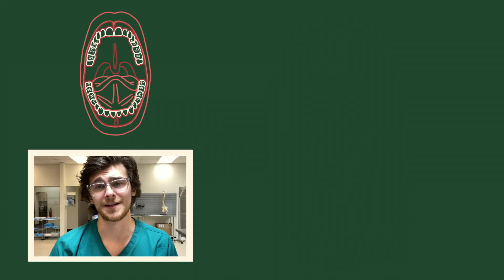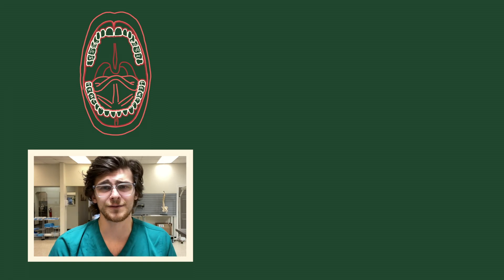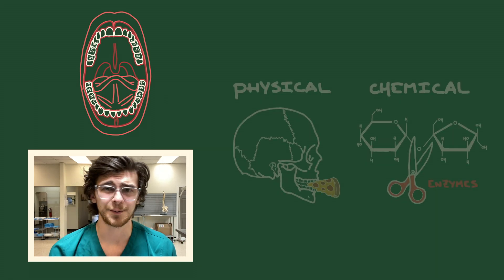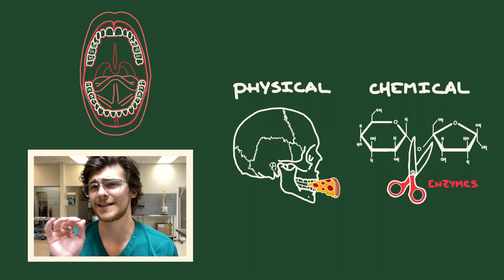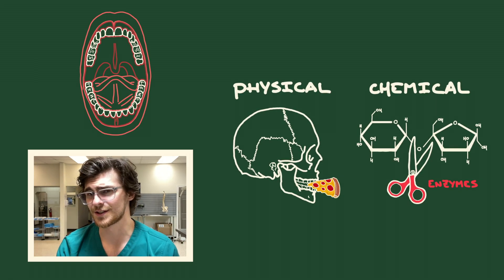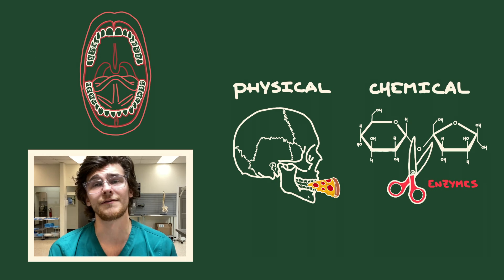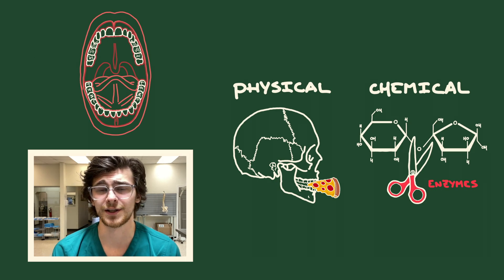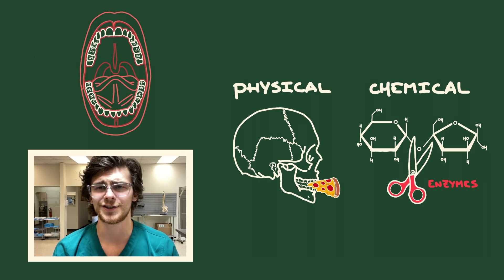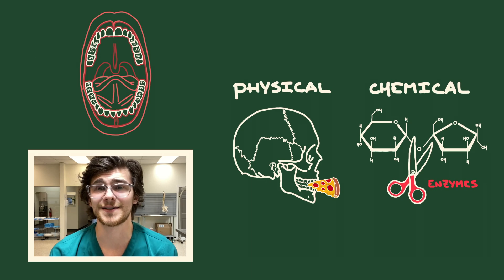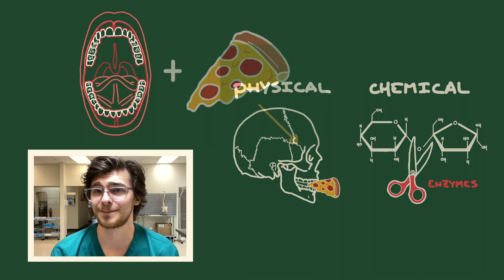Digestion is going to begin in the oral cavity. We have two different types of digestion: physical and chemical digestion. Mastication, or chewing, is an example of physical digestion, while digestion carried out by enzymes is classified as chemical digestion.